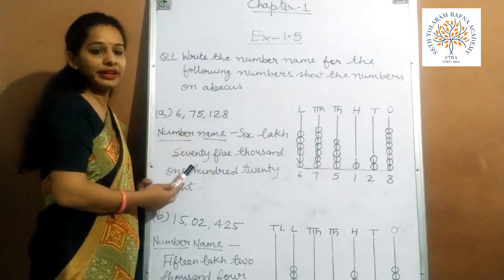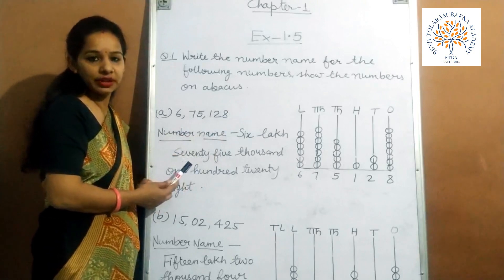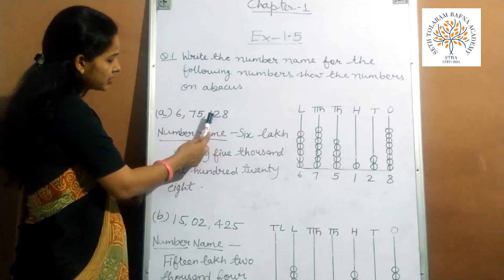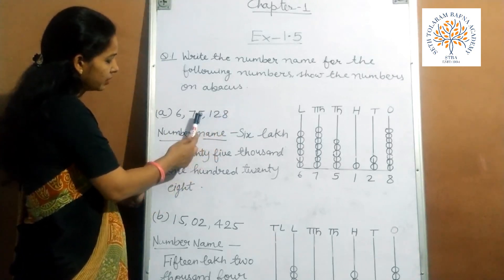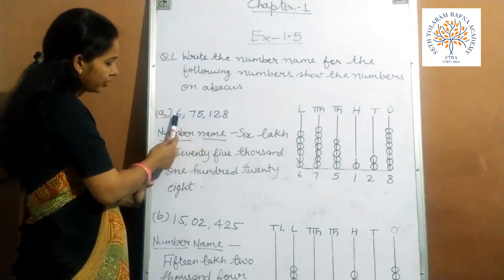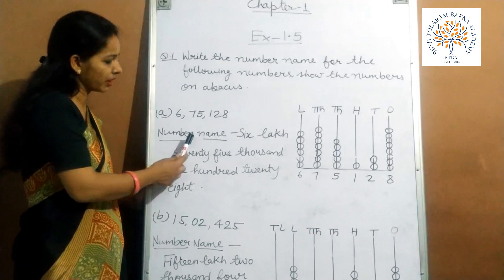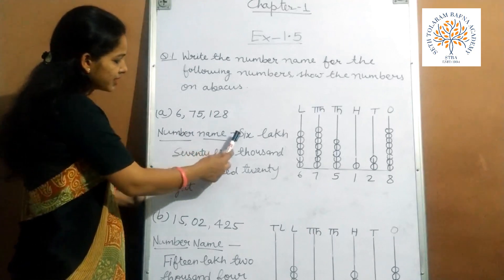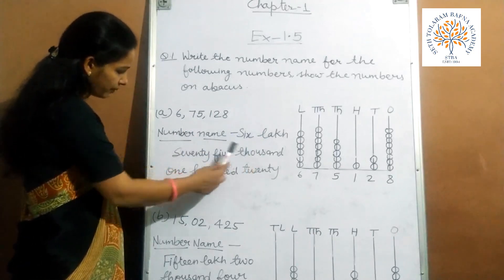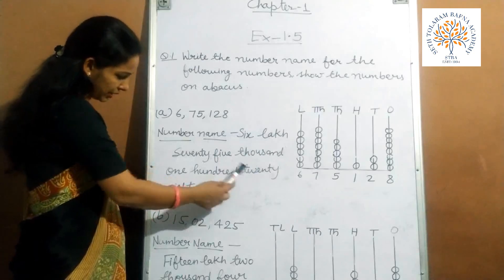So according to the Indian place value chart, count 1s, 10s, 100, 1000, 10,000 and lakh. So the number name of this number is 6,75,128.